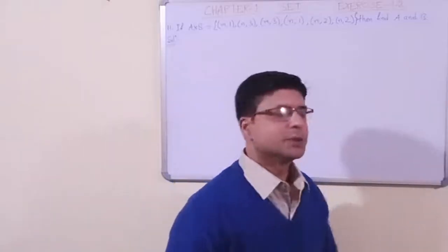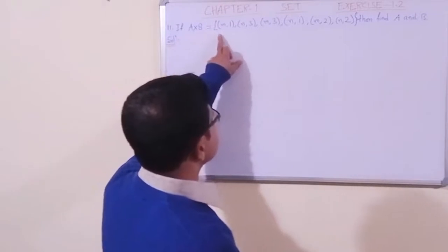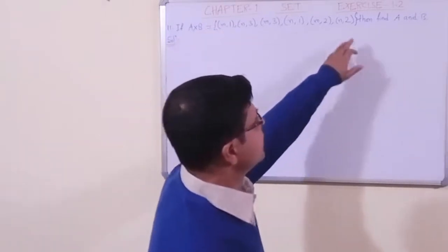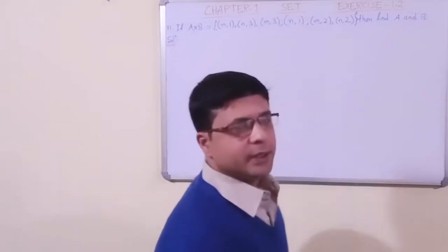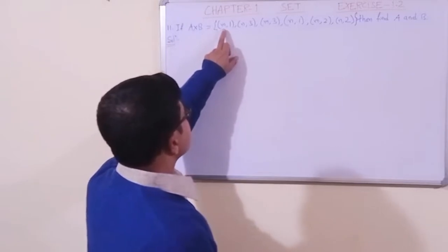We have taken question number 11. If A cross B is this set, okay, the Cartesian product is given, then find A and B. The A cross B are the set. Determine which are the x-coordinates. X-coordinate determine the elements of set A.